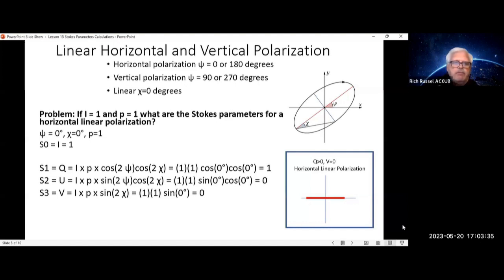Let's look at a problem. If psi is 0 degrees, and chi is 0 degrees, and your P equals 1, and we'll make S0 as the intensity equal to 1. We work out the formulas, S1 equals 1, S2 equals 0, and S3 equals 0.